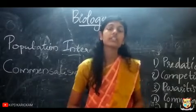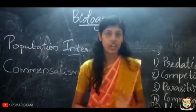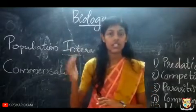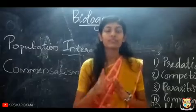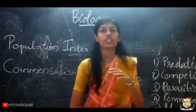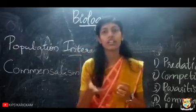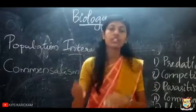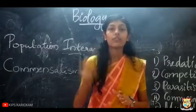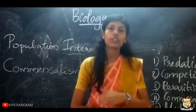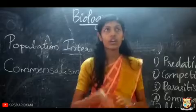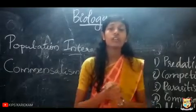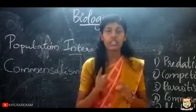Another example is the interaction between Remora Fish and Shark. The Remora Fish gets attached onto the Shark's body to obtain its food. The food eaten by the Shark — the leftover food — is consumed by the Remora. So the Shark is neither benefited nor harmed, while the Remora Fish gets its food and is benefited.